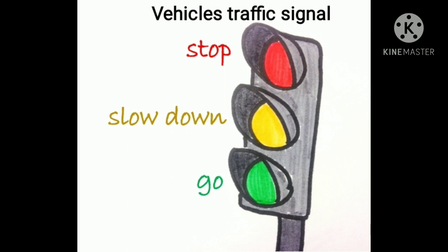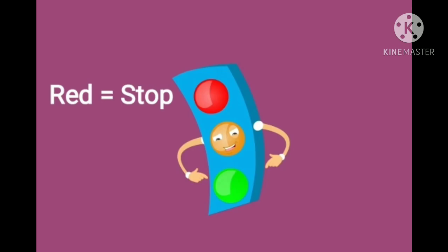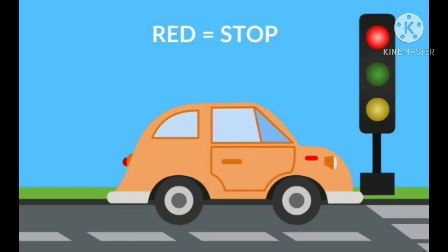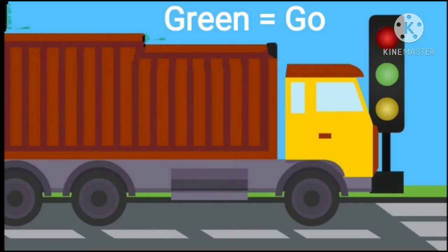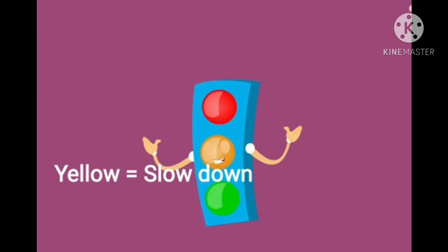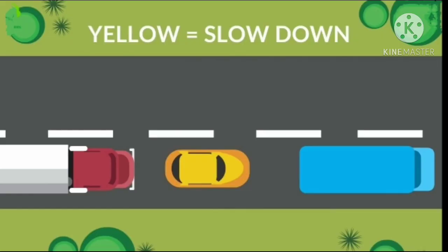Red says stop — so when the signal light is red, all the vehicles stop. Green says go — it is only when the signal turns green that vehicles on the road move ahead. Yellow means to slow down — when the signal turns yellow, all the vehicles on the road should slow down.